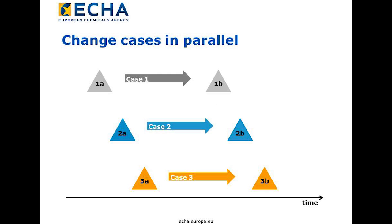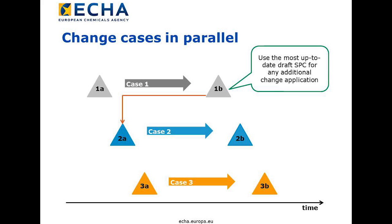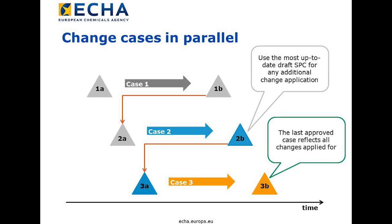Let's look at this example of three change cases one after another, assuming the cases are approved in the order of application. Having applied for all those changes, we need to make sure that all changes are reflected in the asset. In order to reflect the changes applied for in case one, you need to use the resulting SPC when initiating case two. The same is true for the third case — in order to reflect the changes from cases one and two, you need to use the resulting SPC from case two when initiating case three. The final SPC will only contain all changes if you use the latest SPC for additional applications. Only a correct SPC will modify the asset correctly.